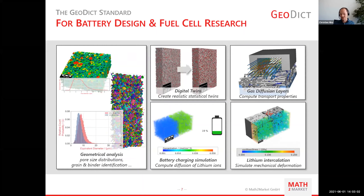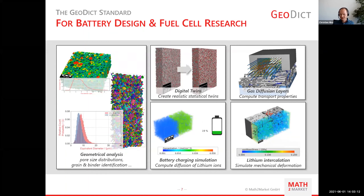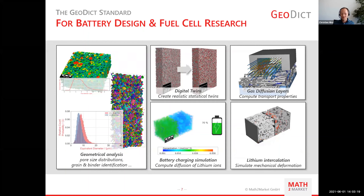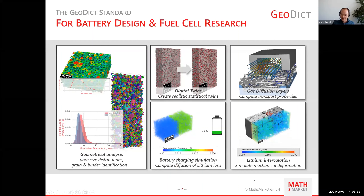For battery design and fuel cell research, GeoDict covers a wide range of features: geometrical analysis to characterize materials from imported image scans, generation of digital twins to design new individual models, computation of multi-phase transport and gas diffusion layers, battery charging simulations with computed diffusion of lithium ions, and lithium intercalation as animated here with increasing meso stress.